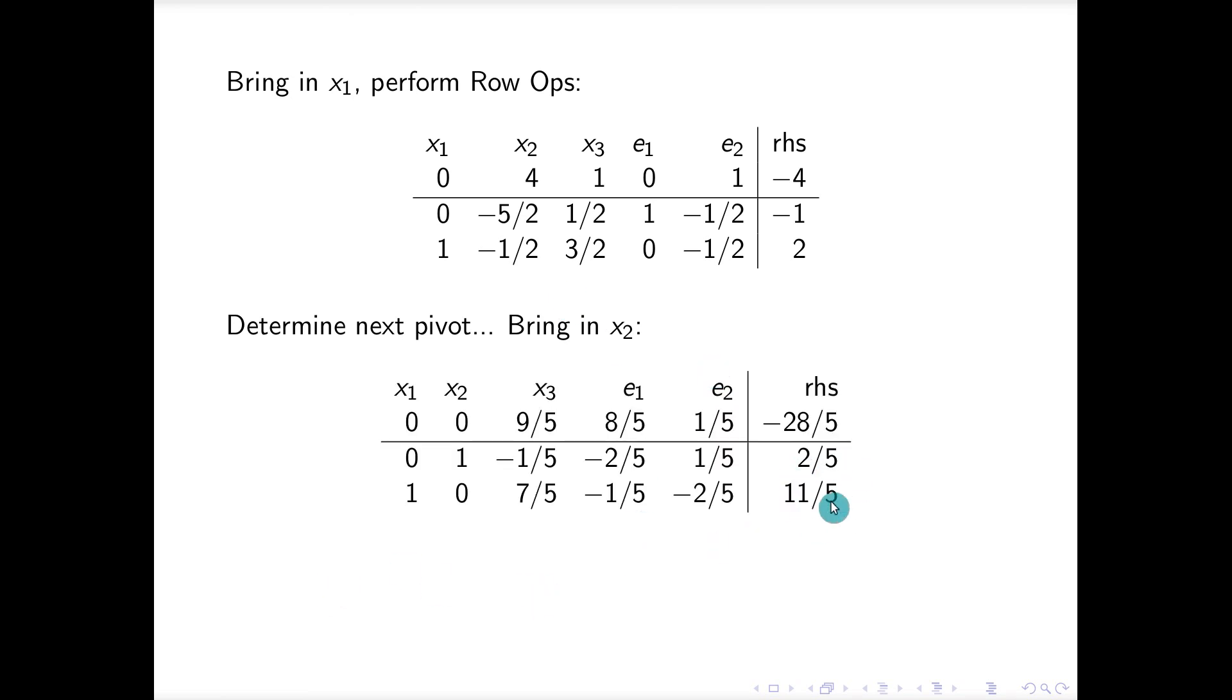Voila! No more negatives in the right hand side, therefore this is our optimal solution. x1 is equal to 11 fifths, x2 is equal to two fifths, and remember that this is the negative of the value that we actually want. So in terms of the original problem, the original minimum is 28 fifths. Very good. x3 is equal to zero by the way. Good.